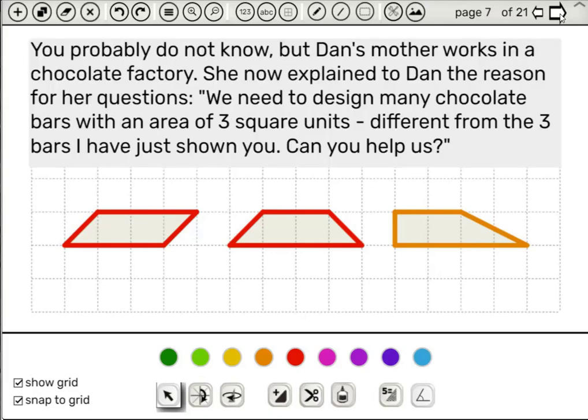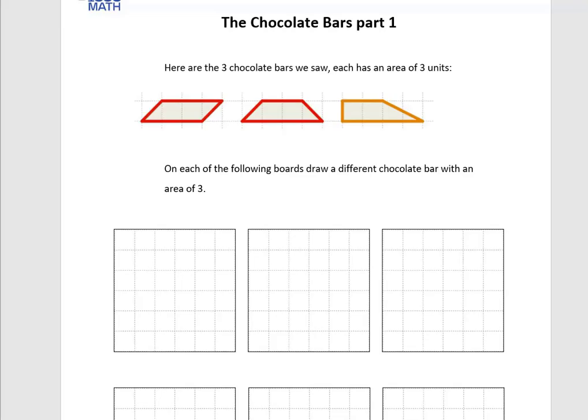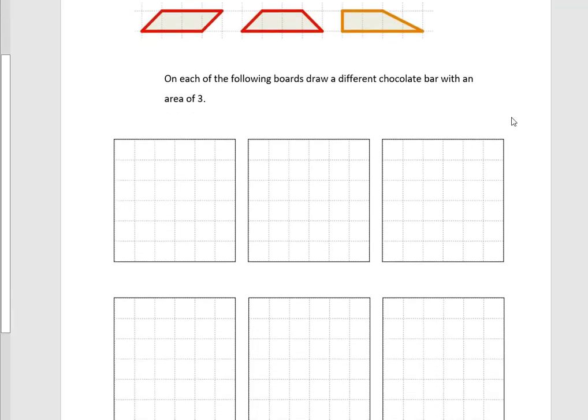You probably don't know, but Dan's mother works in the chocolate factory. She now explains to Dan the reason for her questions. We need to design many chocolate bars with an area of 3 square units different from the 3 bars I have just shown you. Can you help us? And we reach the student worksheet, designing different chocolate bars with an area of 3 square units. This is the student worksheet. The students have 6 areas to try to draw 6 different shapes of chocolate bars that will all also have an area of 3.